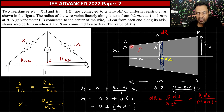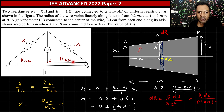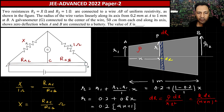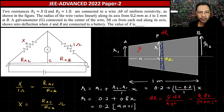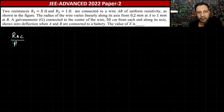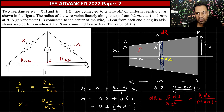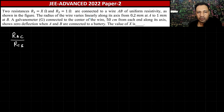To find R_AC, I integrate dR from 0 to 0.5 m, and for R_CB I integrate from 0.5 to 1 m. I directly write the ratio R_AC/R_CB. Since k cancels, the ratio becomes: the integral from 0 to 1/2 of dx/(4x+1)² divided by the integral from 1/2 to 1 of dx/(4x+1)².